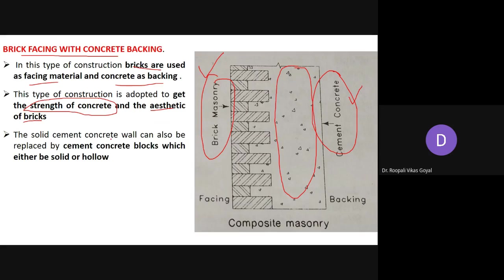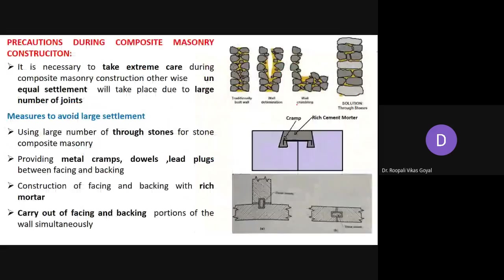Instead of a solid cement concrete wall, you can also use cement concrete blocks on the back side. These blocks may be either solid or hollow blocks. So it is not necessary to continuously construct a concrete wall on the back side — concrete blocks, hollow or solid, can be arranged behind the brick masonry facing.